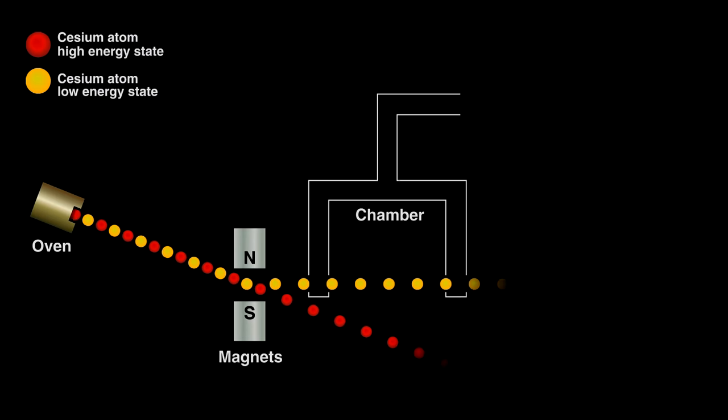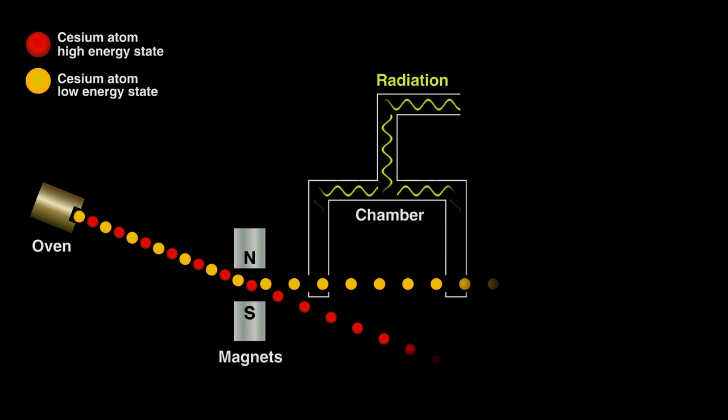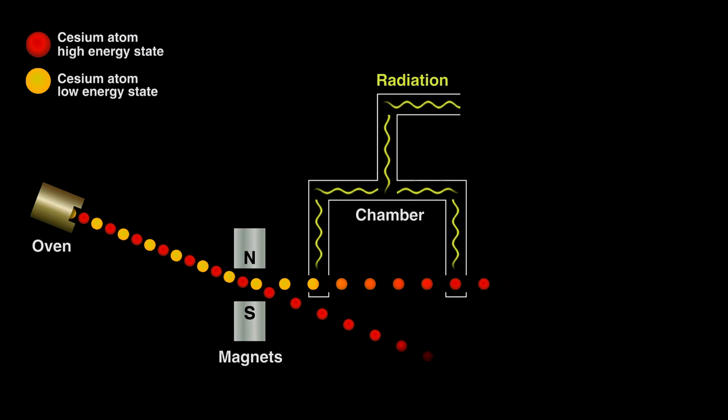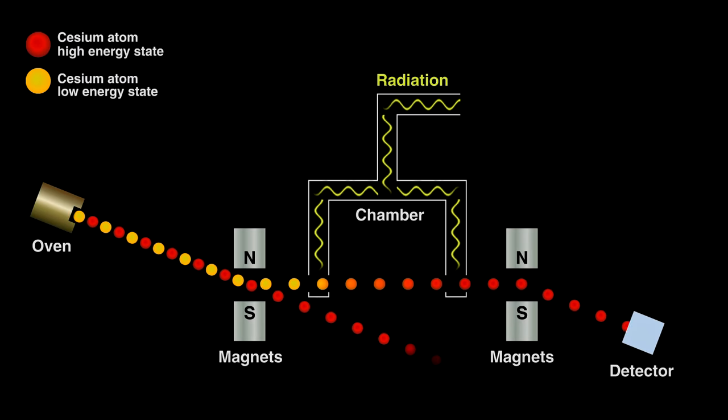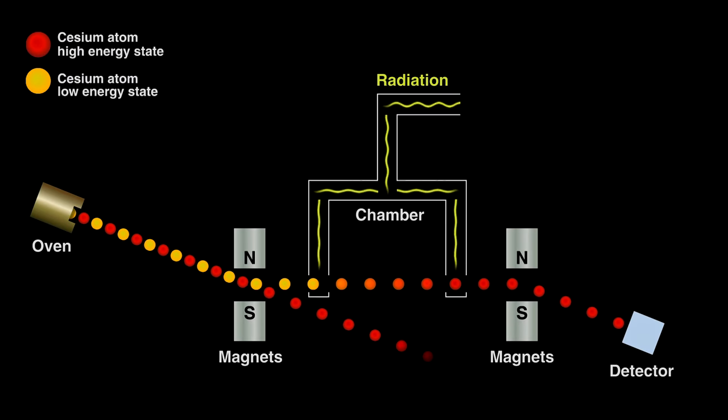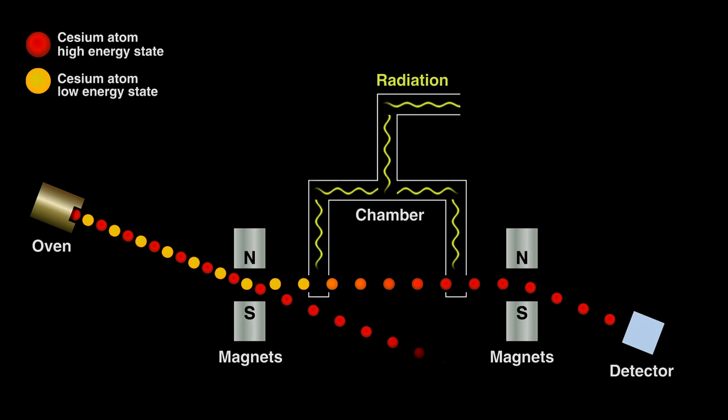Inside the chamber, we bombard the ions with just the right wavelength radiation to make them jump to higher energy. As these gaseous ions leave the chamber, they pass through another magnet that directs high energy ions toward a detector, this time discarding any lower energy ones. The detector converts the arriving ions to a current.